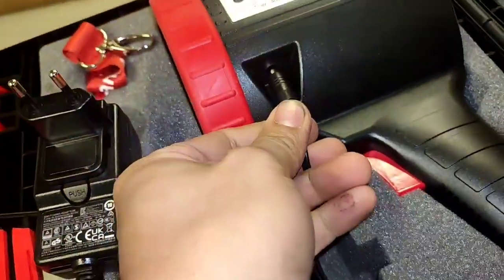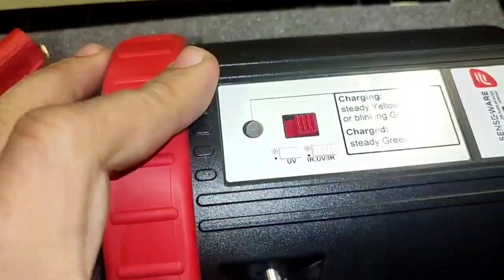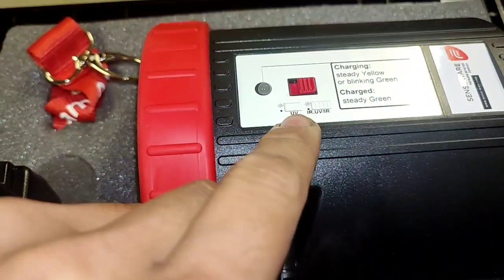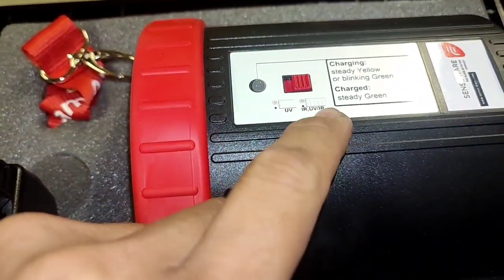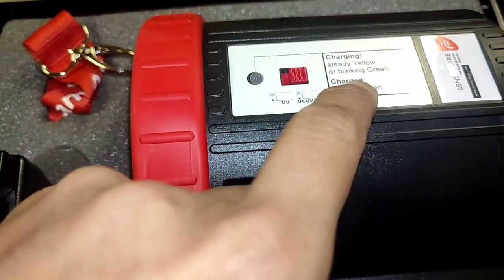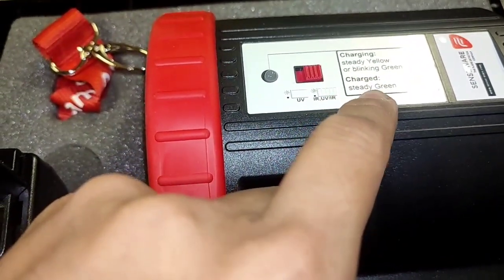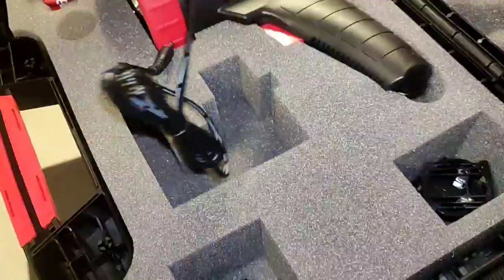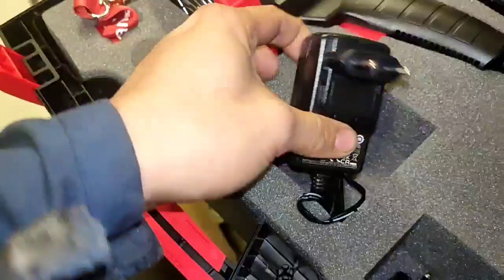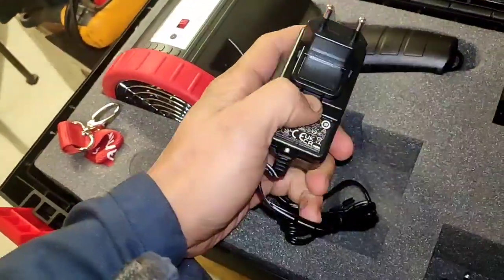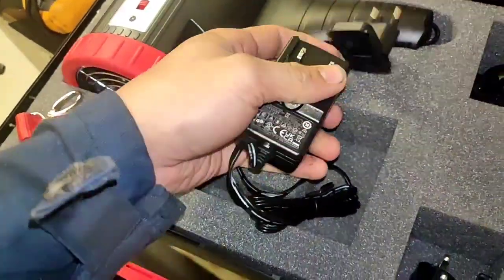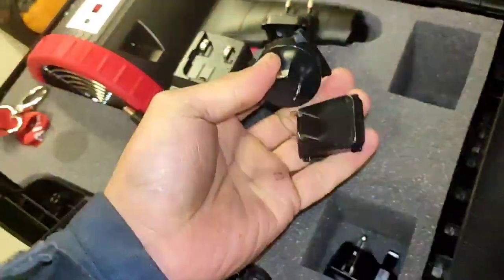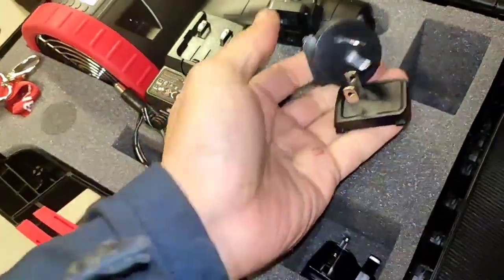That is the source for charging. There is a charging indicator. Steady yellow means blinking green means charging. Charged is steady green. There are also different adapters for the power supply charger.